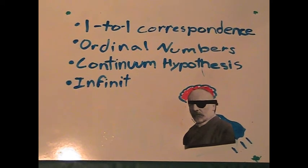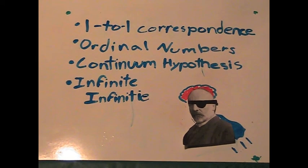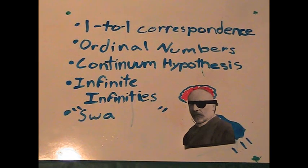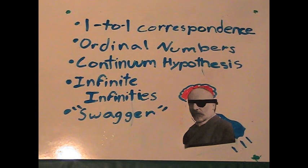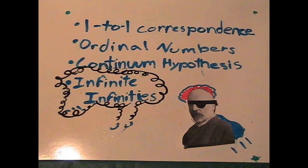Cantor proposed the infinite infinities theory. It is also said that he was the first person with any kind of swagger. But this is unknown. Let's take a closer look to infinite infinities.